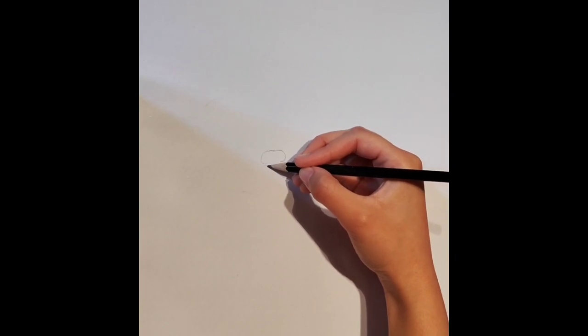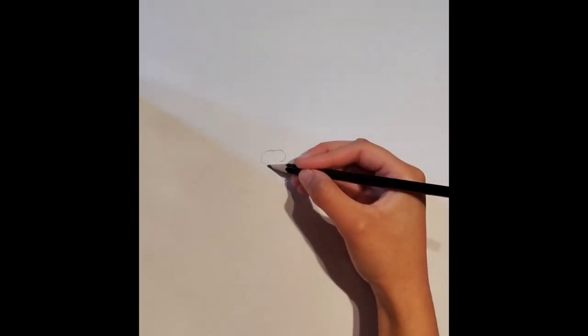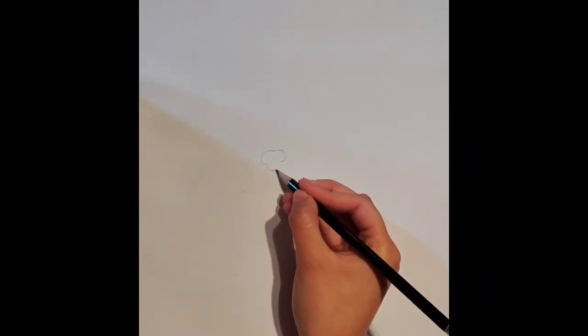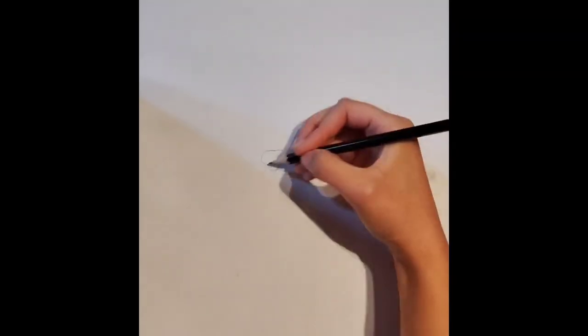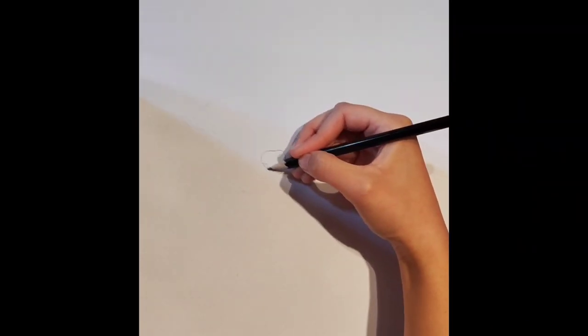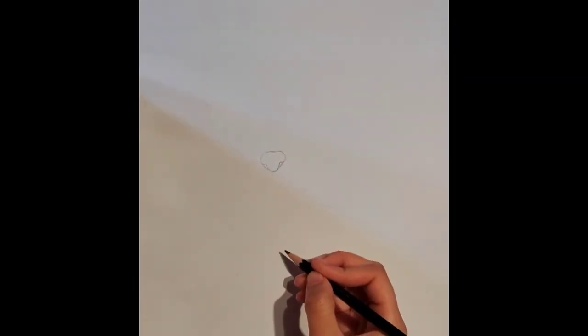From here, connect these two hooks with another curve that's elongated downwards towards the south. Finally, fill in the missing gap on both sides where our nostrils will be located.